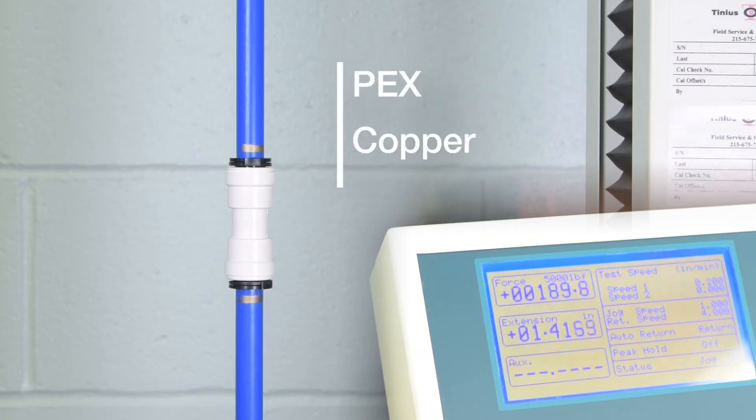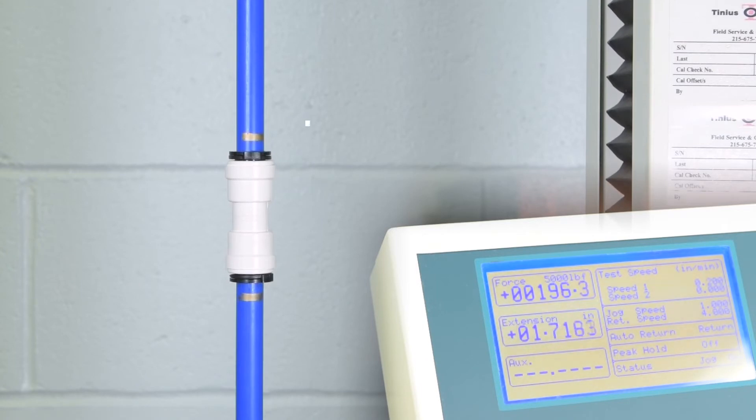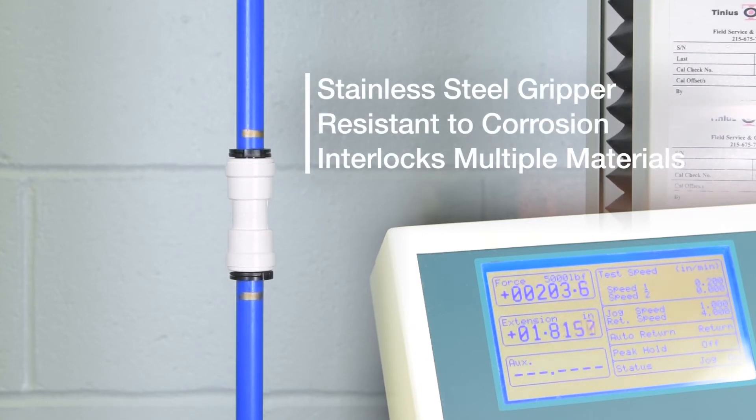Whether your tubing is PEX, copper, or CPVC, AquaLock Push-to-Connect fittings keep you covered with a stainless steel gripper ring that's not only resistant to corrosion, but interlocks with multiple pipe materials without any special tools.